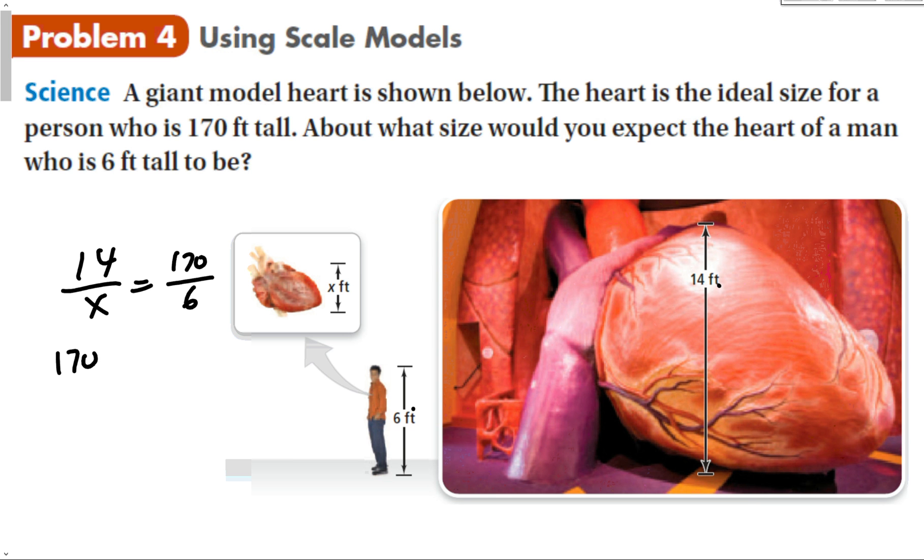Cross multiply. 170X equals 14 times 6, which is 84. Divide by 170. It's okay to get decimals. And we get 0.49 about feet. So we now know that the height is about 0.49 feet. And if we change that to inches, it is going to be about 5.9 inches. And that answer makes sense, right? 5.9 inches, if you think about how big that is in a 6 foot guy, that's about how tall your heart should be.